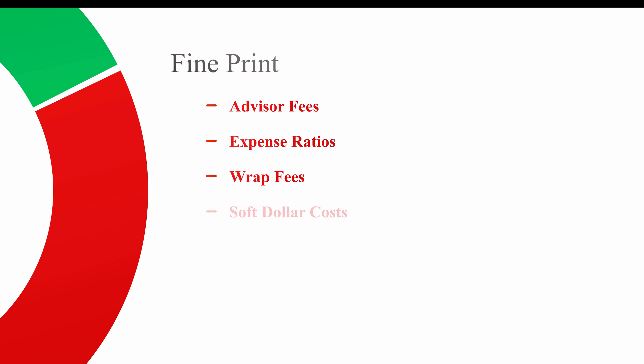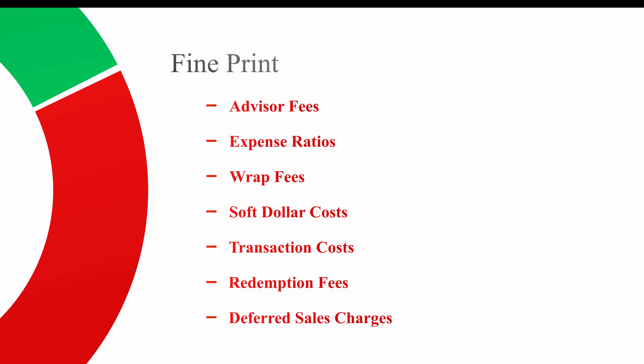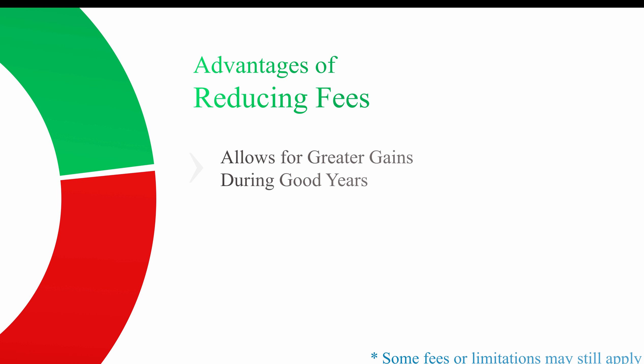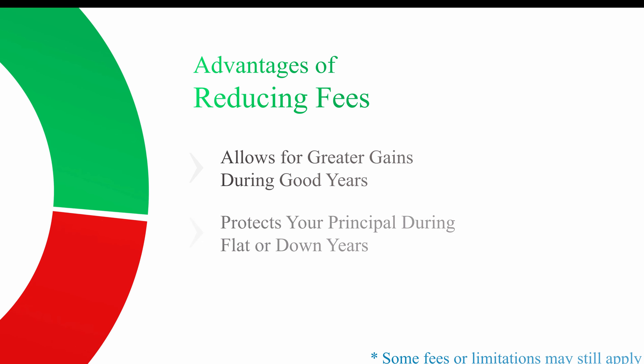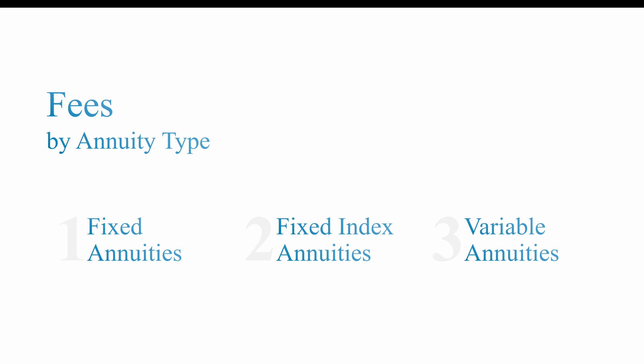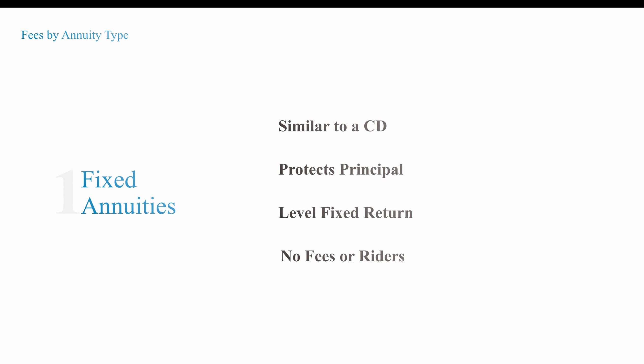So where are these fees? You have advisor fees, expense ratios, wrap fees, transaction costs, deferred sales — I could go for several pages on fees. Some advantages of reducing your fees: it allows for greater gains during the good years, it protects your principal during flat or down years, and as we've discussed with lost opportunity cost, you earn more money on the money that didn't go to fees. Now let's look at fees by annuity type. A fixed annuity works similar to a CD — it protects your principal with a level fixed return of sometimes two, three, or four percent, and there are no fees or riders attached to generic fixed annuities.